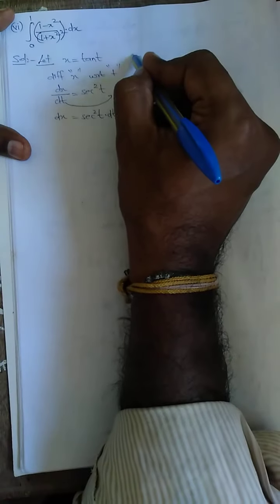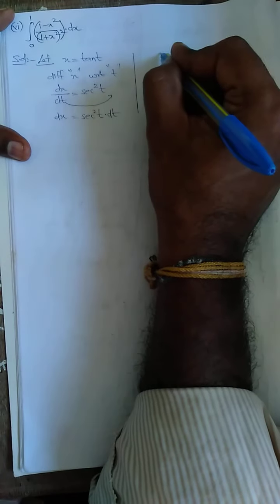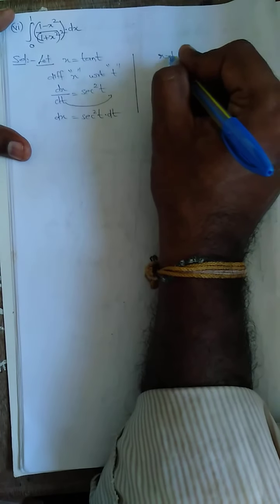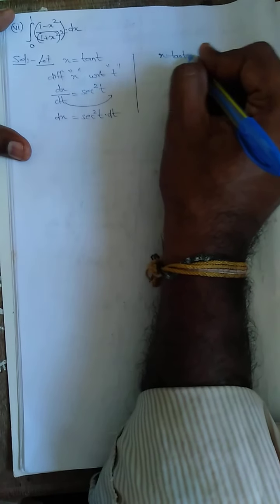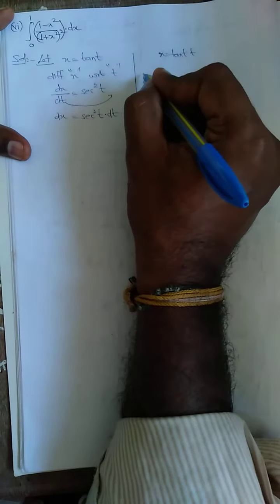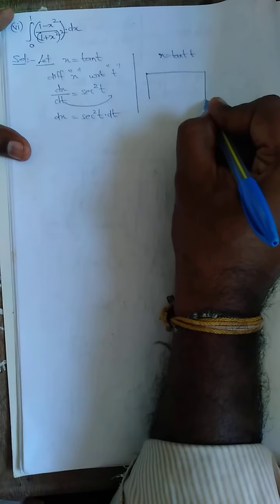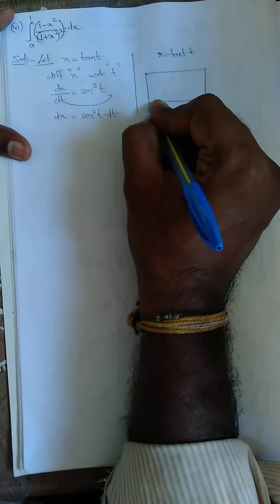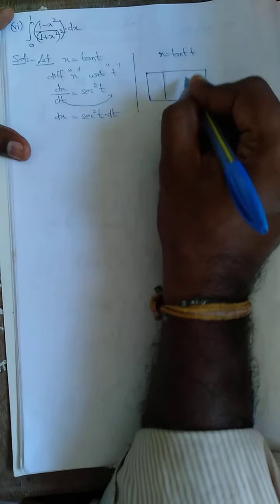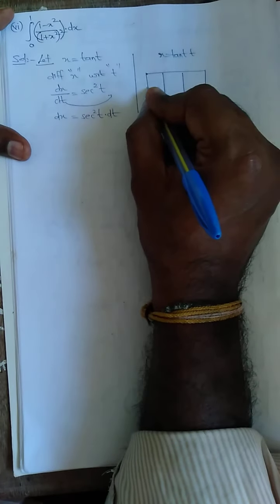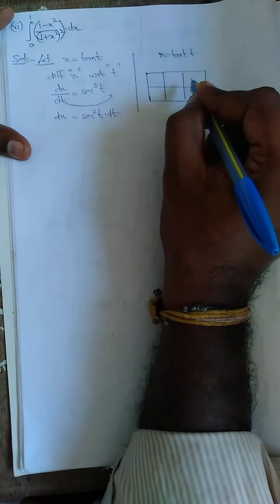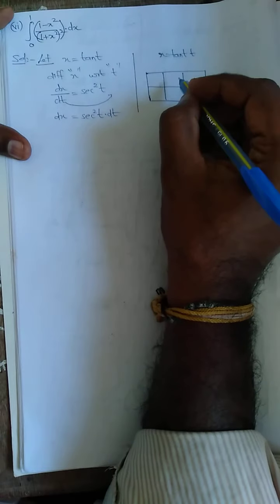So I need to change the limit also. x is equal to tan t, so put the box and change the limit properly. Otherwise, the answer will be wrong.